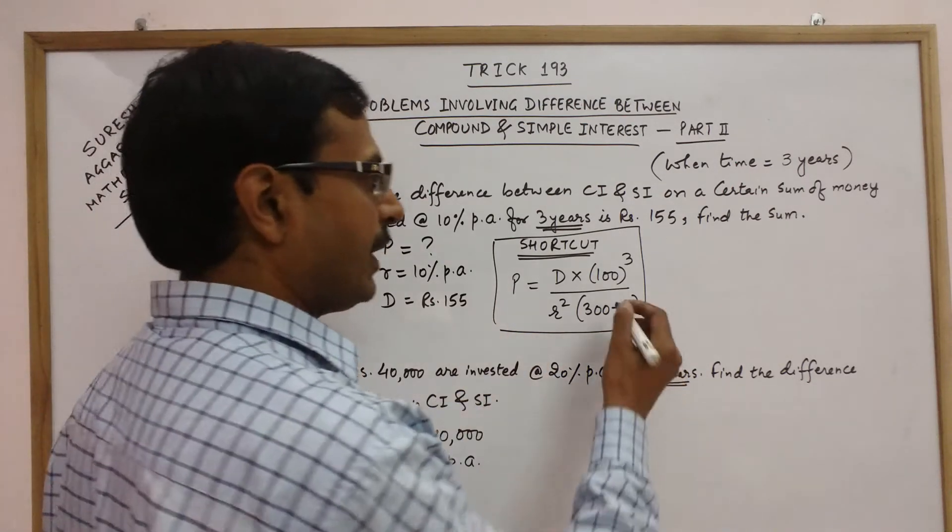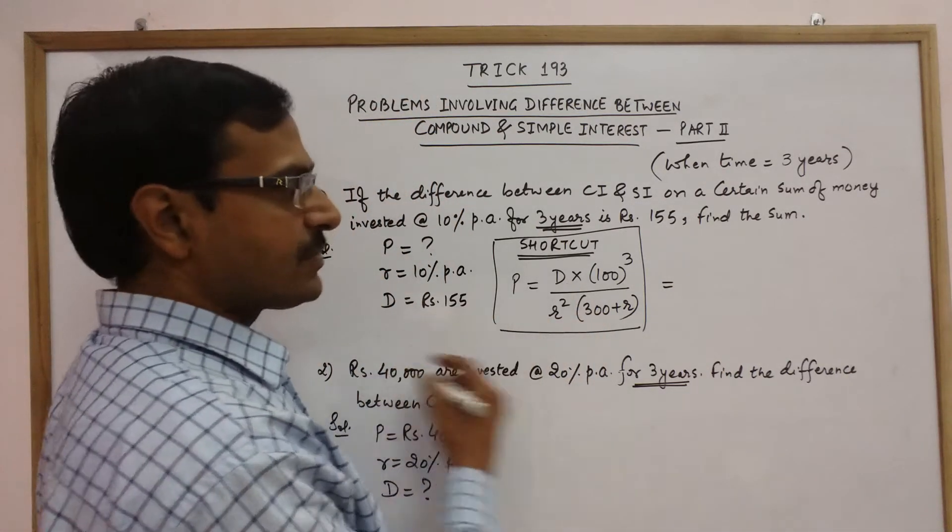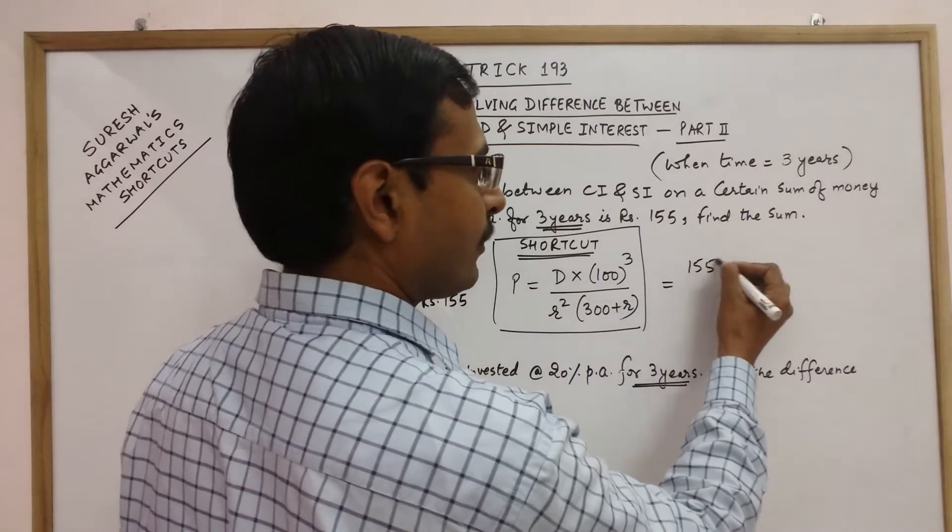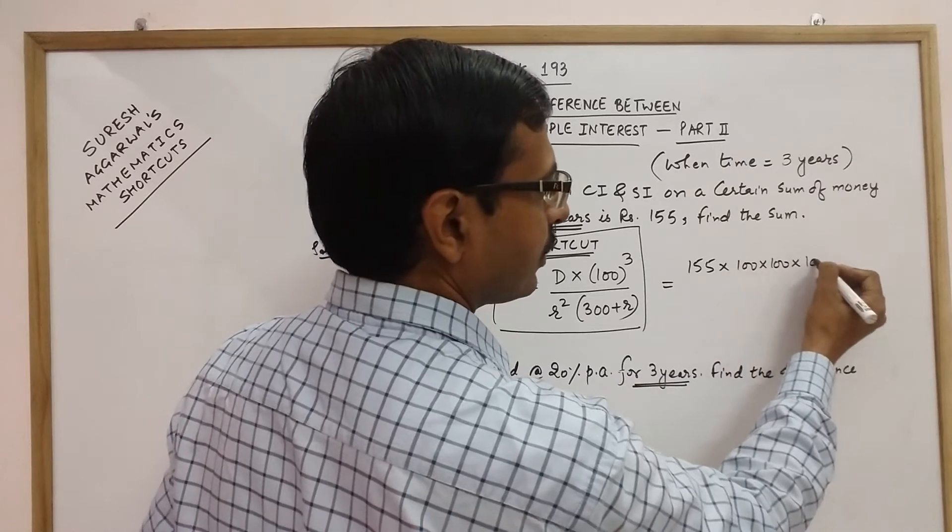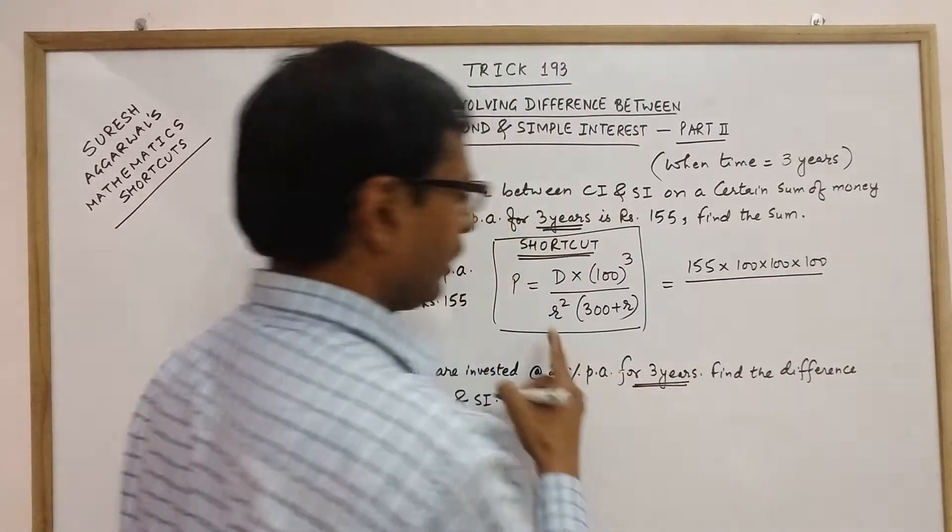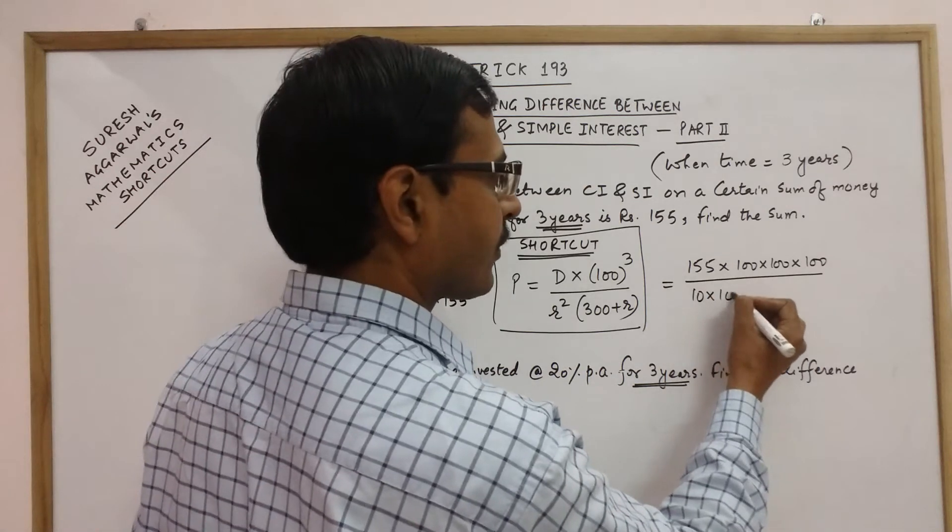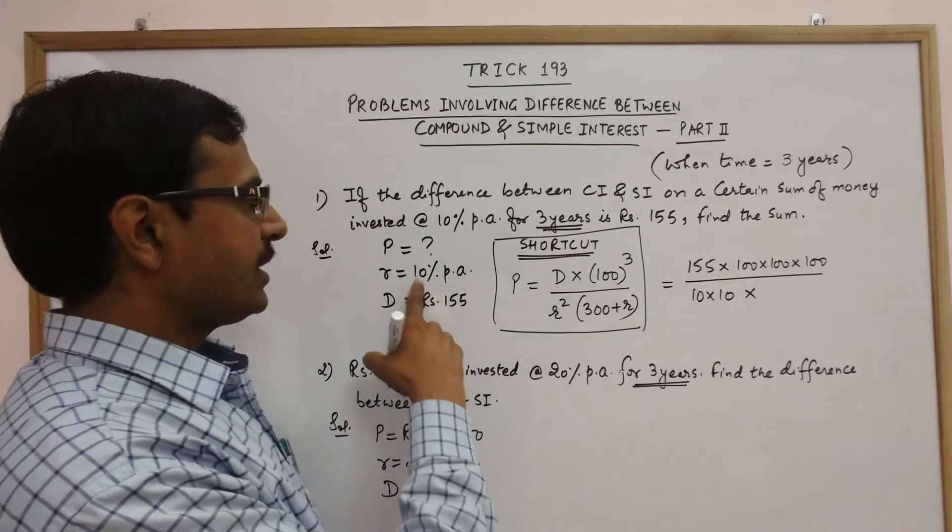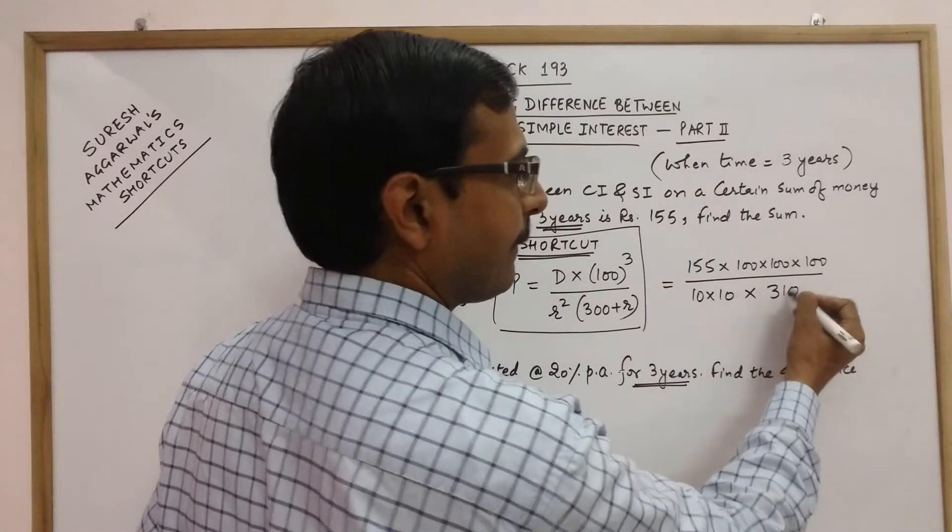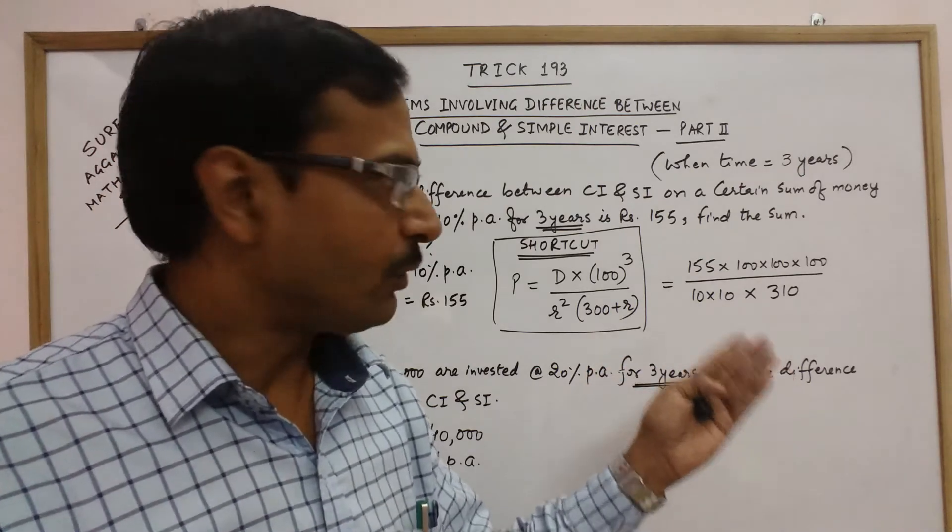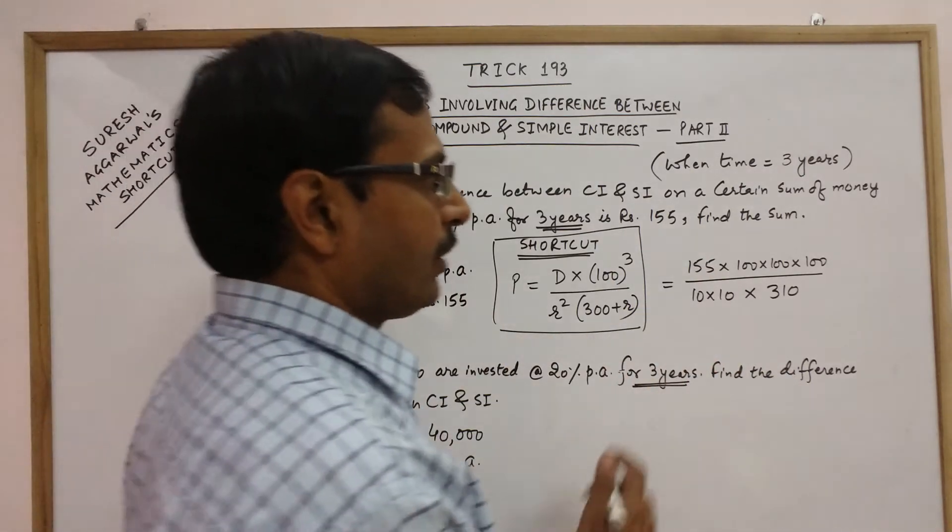Now let us apply this to solve this problem. Here we are given D as 155 into 100 three times upon R square. R is 10, so 10 into 10, and 300 plus R. R is 10, so 300 plus 10, that is 310. Now you need to just simplify this and you will get the final answer, the principal amount.